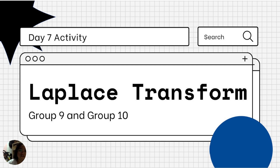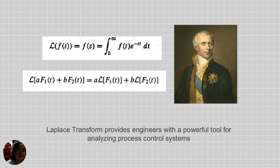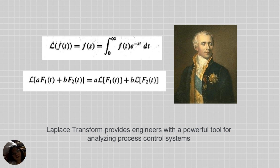Laplace transform provides engineers with a powerful tool for analyzing process control systems. The Laplace transform of f(t) is defined as F(s) = integral from zero to infinity of f(t) e^(-st) dt. The Laplace transform of a times f(t) is equal to a times the Laplace transform of f1(t) plus b times the Laplace transform of f2(t).